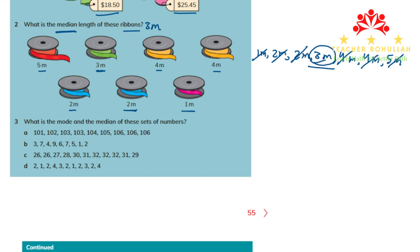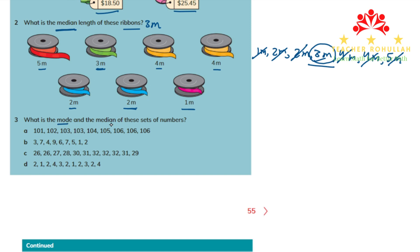The number in the middle is 3m, so the median of these ribbons is 3m because 3m is in the middle. Question 2 is solved. In question 3, we need to find the mode and the median of sets A, B, C, and D. Set A is already ordered from smallest to biggest. The mode — the number that occurs most often in set A — is 106, because we see it 3 times.